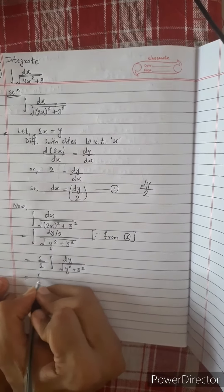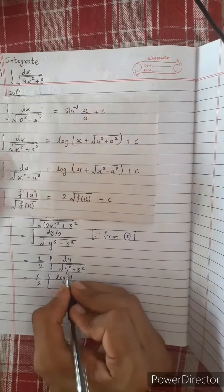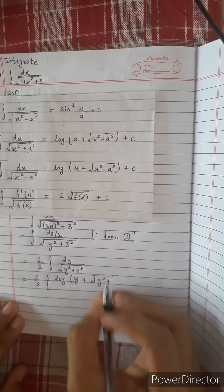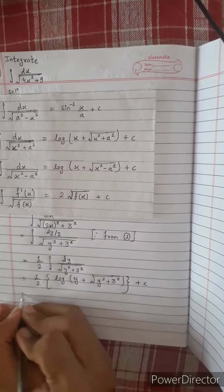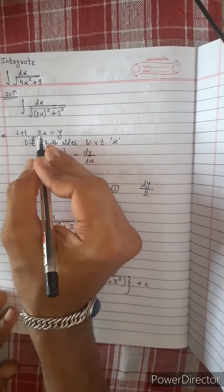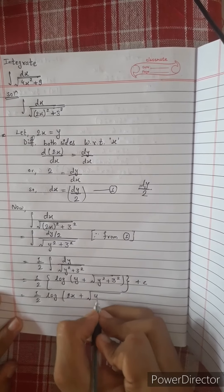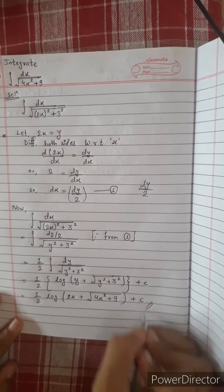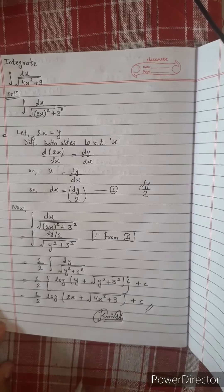This gives us 1 by 2 times the standard formula applied to y squared plus a squared, with a squared equal to 3 squared, resulting in 1 by 2 times log of 2x plus the square root of 4x squared plus 3 squared plus a constant C.